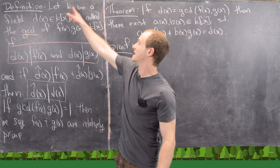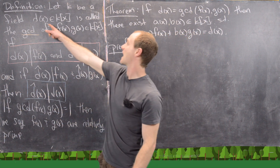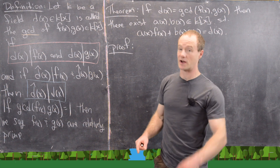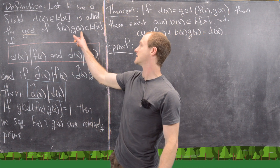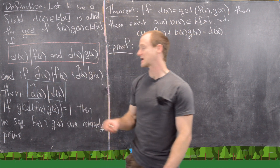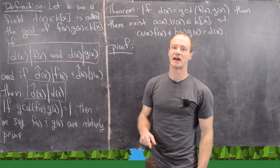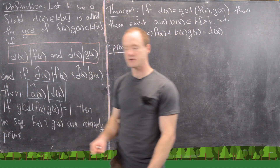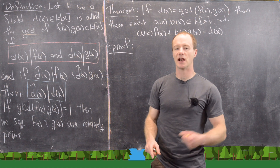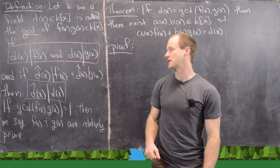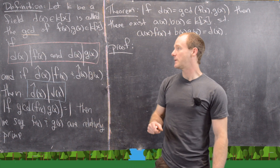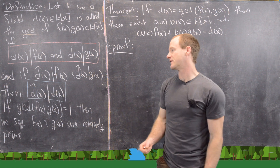Suppose that K is a field. We say that D(X) is the greatest common divisor — the GCD — of F(X) and G(X) in K[X] if D(X) divides F(X) and D(X) divides G(X). In other words, F(X) is a multiple of D(X) and G(X) is also a multiple of D(X), meaning each equals D(X) times some other polynomial. This is the property of being a common divisor.